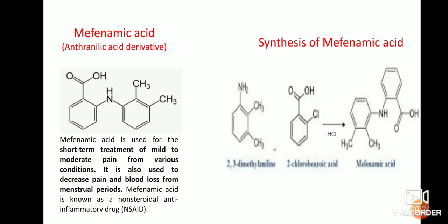The first one is mefenamic acid, which comes under anthranilic acid derivatives. It is mainly used for short-term treatment of mild to moderate pain from various conditions. It is also used to decrease pain and blood loss from menstrual periods.